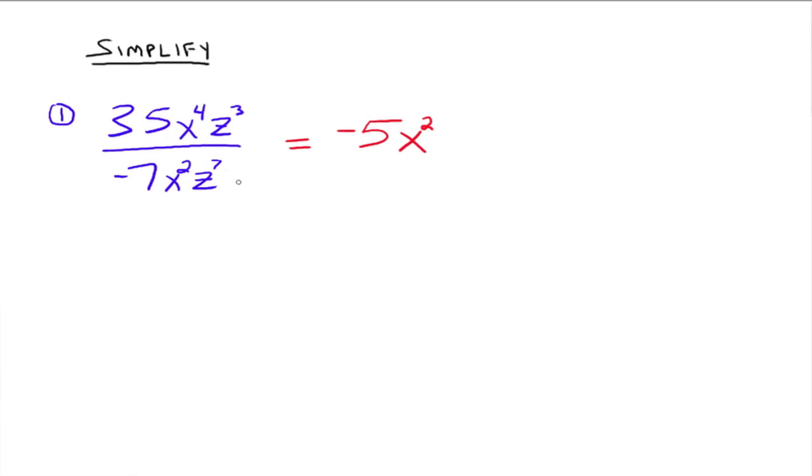And then we go to the z's. We say, all right, we have z in the top and the bottom. So we keep the base, and we do top exponent minus the bottom. Well, 3 minus 7 is negative 4.